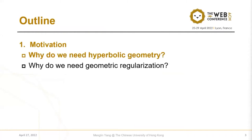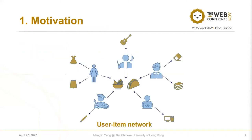Let's look at the motivation of why we need hyperbolic geometry. This is a user-item network, and we found that some of the items are extremely popular, liked by the majority of users, like the items in the center, while some of the items are personalized and not as popular.